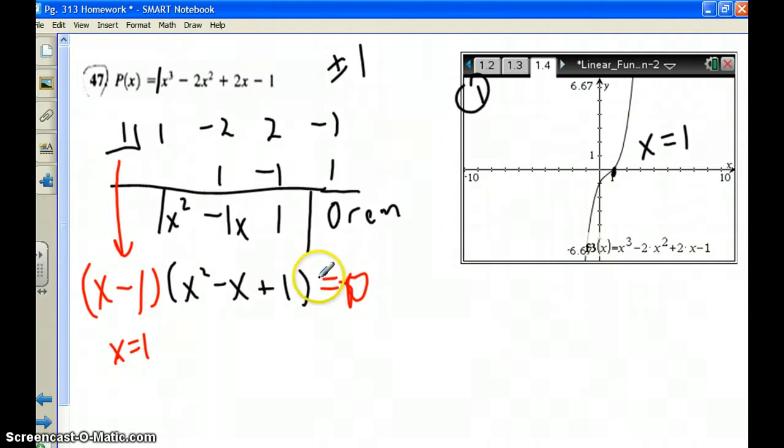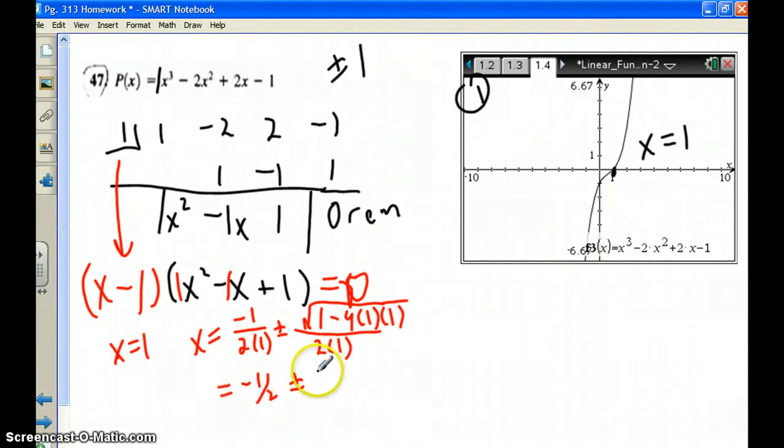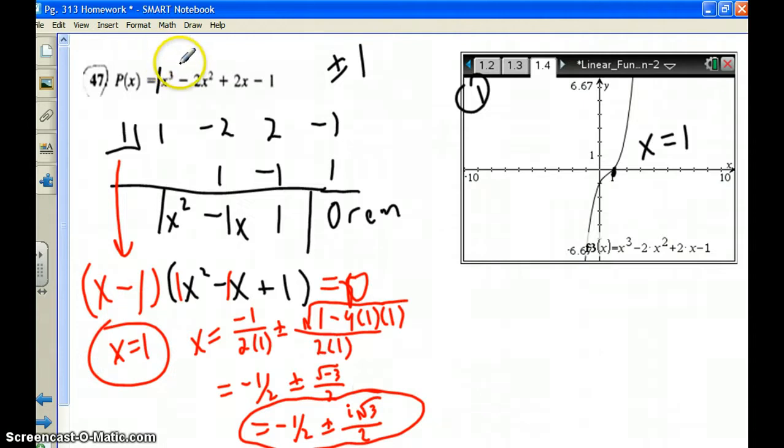Can't just set that equal to 0 and solve it. I guess I could. Essentially, I'm doing quadratic formula here. So my coefficient, A is 1, B is negative 1, C is 1. So I get x equals 1 over 2 times 1 plus or minus square root of b squared, which is 1, minus 4 times a times c. We get negative 1 half plus or minus square root of negative 3 over 2. Or in other words, those two answers would be negative 1 half plus or minus i times square root of 3 over 2.